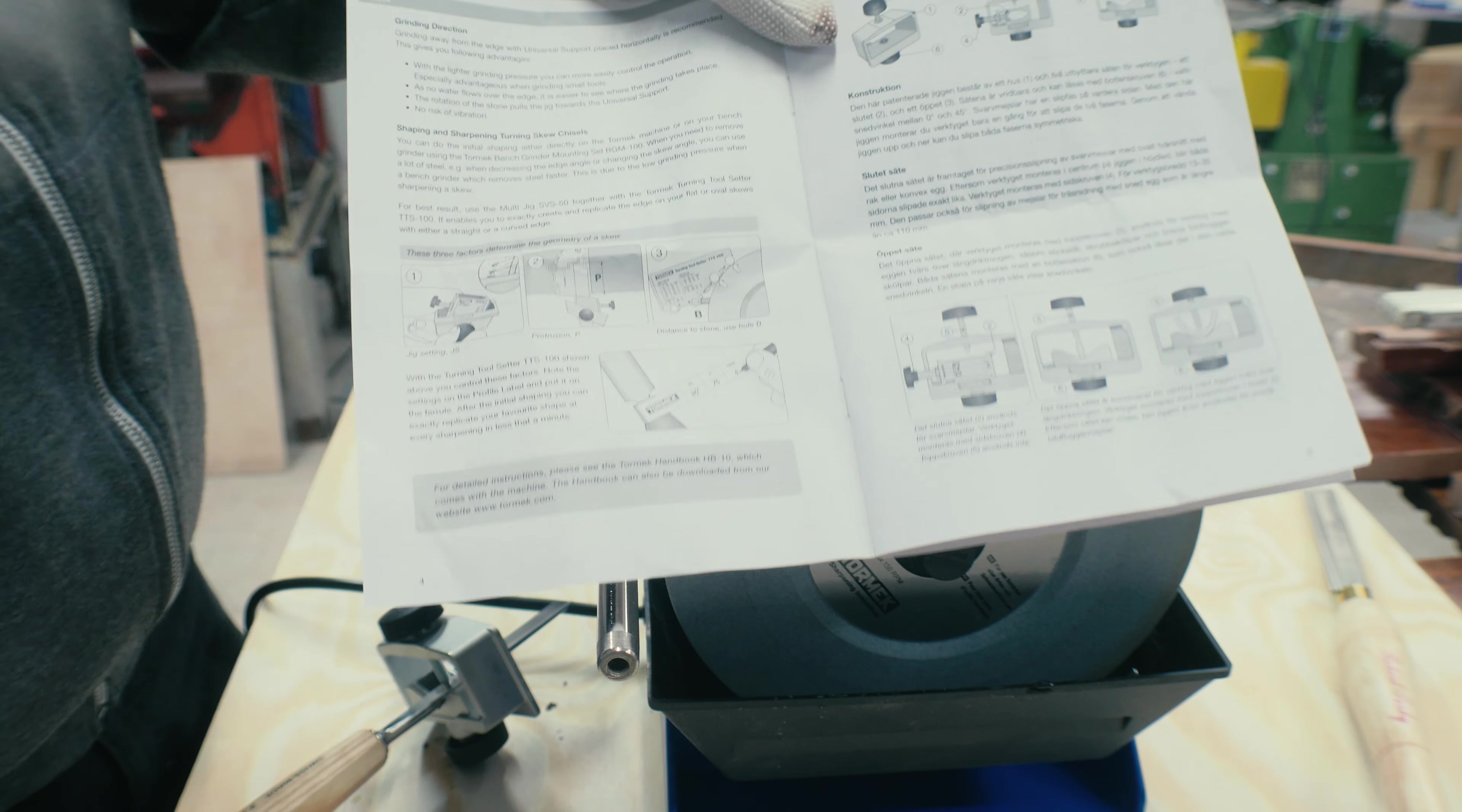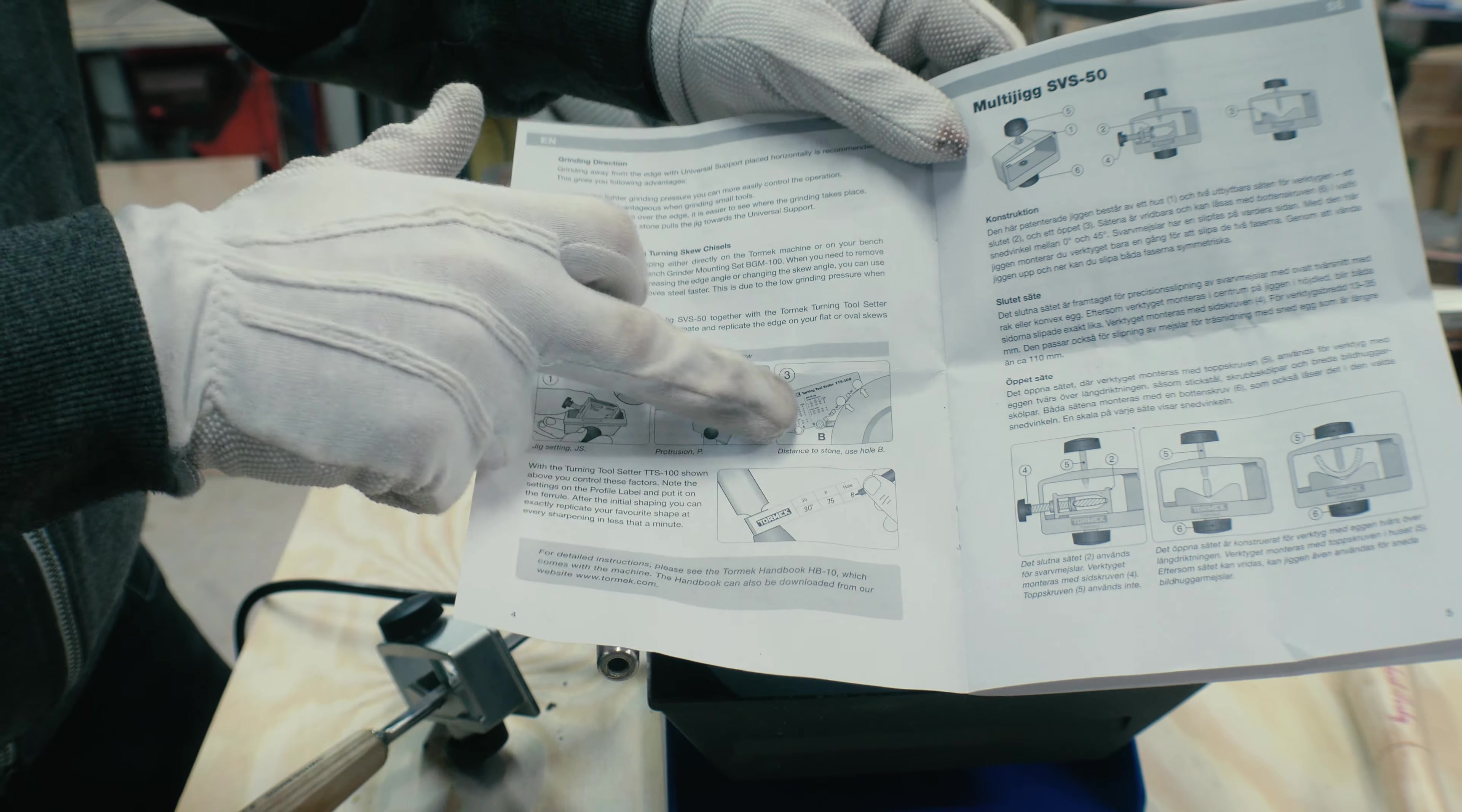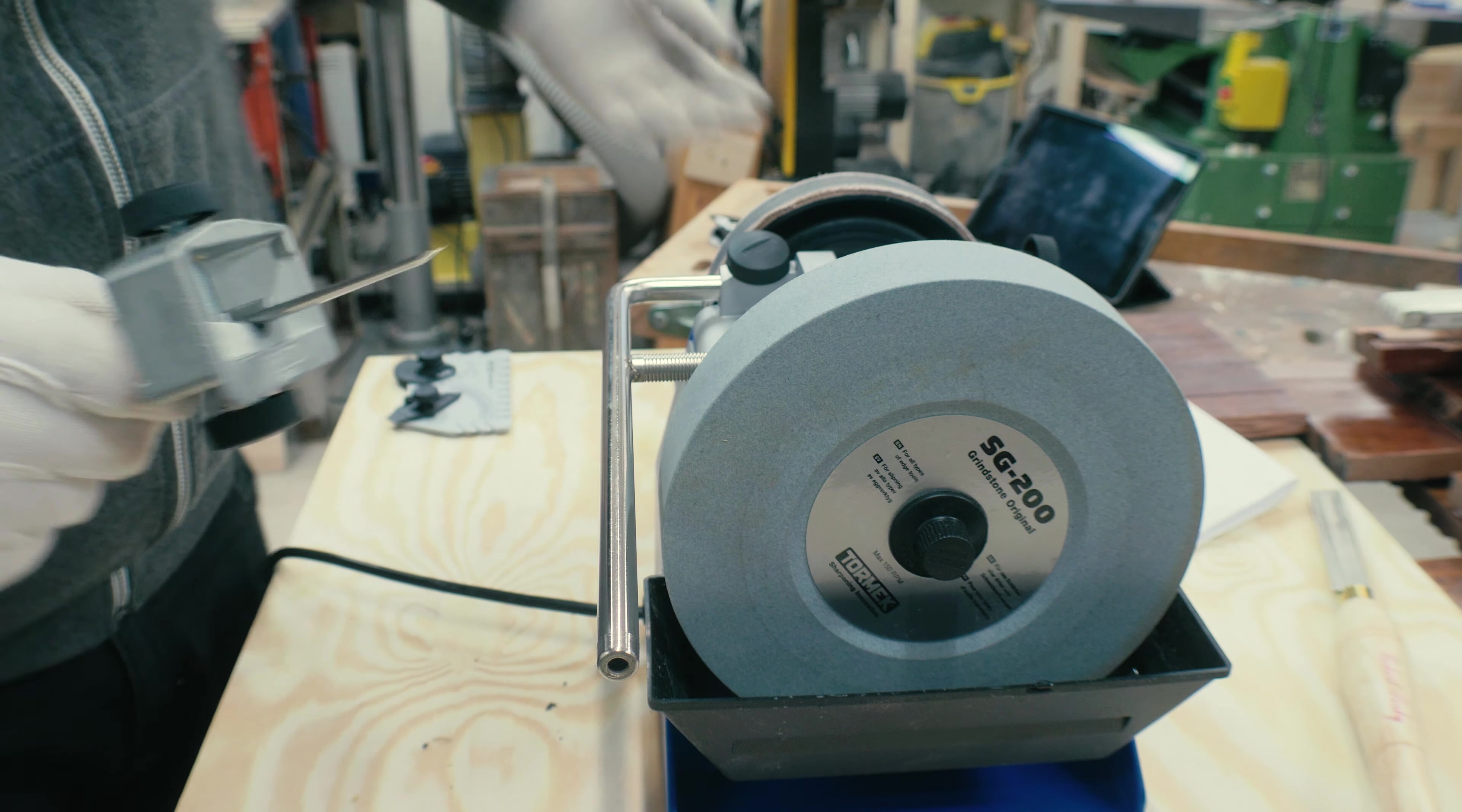I must say that there is a tool that can help you with these adjustments that I'm doing now. It's this tool and it's called the TTS-100. Here you can adjust the angle out from the universal support. I am going to buy this later, but for now I'm just doing it by using my eyes. That also works good.